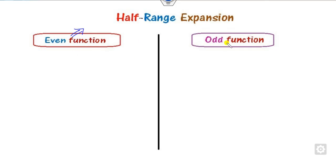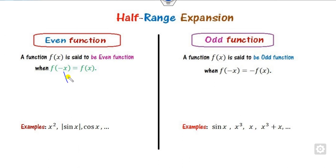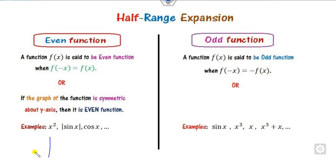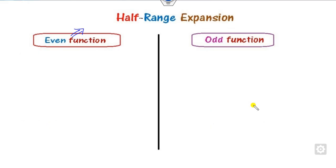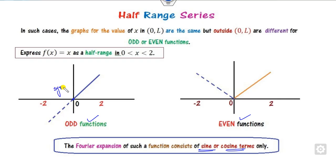We define the even function as whenever f(−x) = f(x). For example, |sin x| and cos x are even functions. For odd functions, sin x and x³ are examples. You can also verify by graph: the graph of x² is symmetric about the y-axis, so it is even. The graph of x³ is symmetric about the origin, so it is odd. Similarly, if a graph is symmetric about the origin it is called an odd function; if symmetric about the y-axis it is an even function.